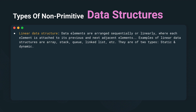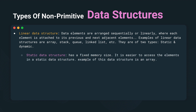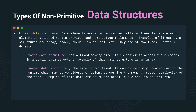Linear data structures are ones where data elements are arranged sequentially. In static data structures, the memory size is fixed and it is easier to access elements — for example, arrays. In dynamic data structures, the size is not fixed; it can be updated during runtime, which may be considered efficient in terms of memory space complexity. Dynamic data structures are better in that the size grows and shrinks depending on the requirement, making them the most efficient way of storing data when it comes to memory space. Examples include stack, queue, and linked list.